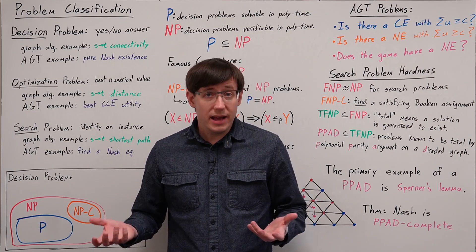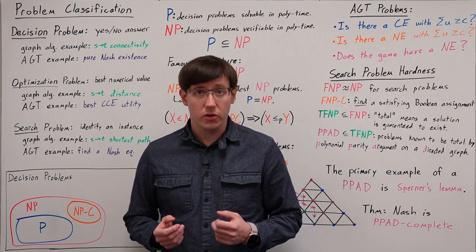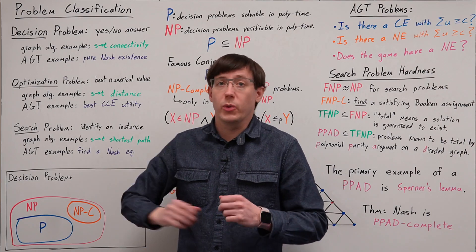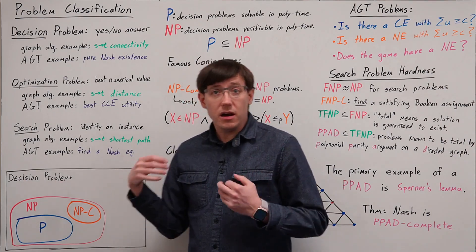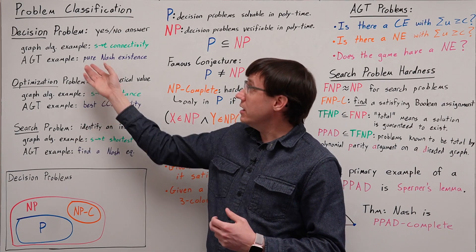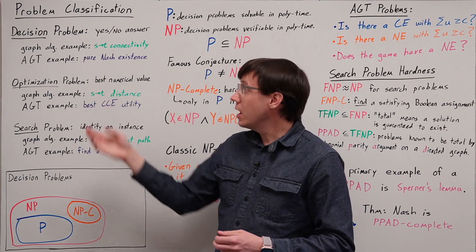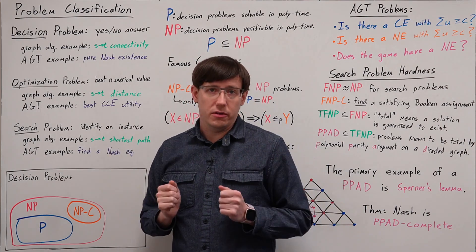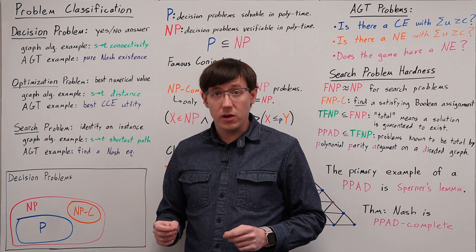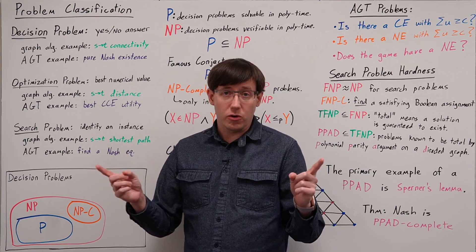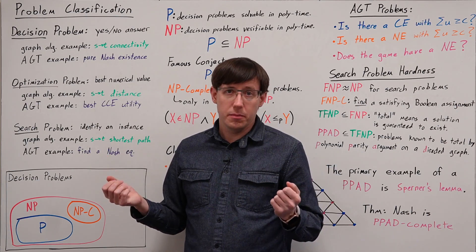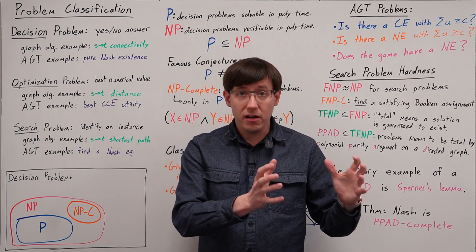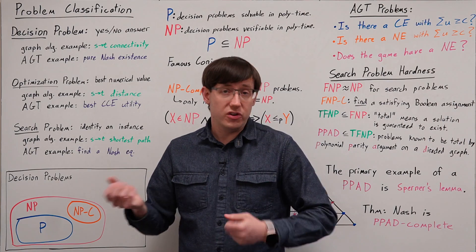If we want to classify different problems by their computational complexity, we need to first classify what sorts of problems we are talking about. We can divide many of the problems we study in computer science into broad categories. A decision problem is one where we are trying to provide a yes or no answer. An example is deciding whether two nodes in a graph have some path that connects them, and a game theory decision problem is determining whether a particular payoff matrix has a pure strategy Nash equilibrium.